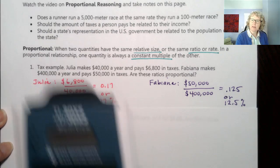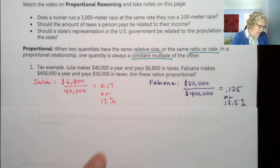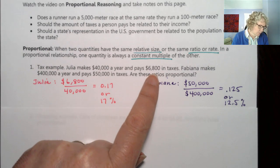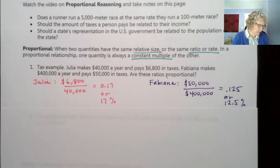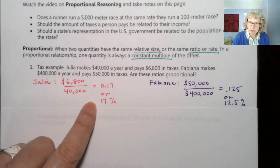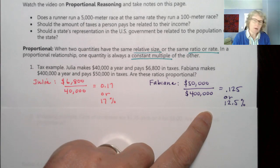So let's look at this. So if you thought that the $6,800 was more of the $40,000 compared to the $50,000 of the $400,000, you were right. Julia's paying more of a larger percentage of her income than Fabiana, and so these are not proportional.